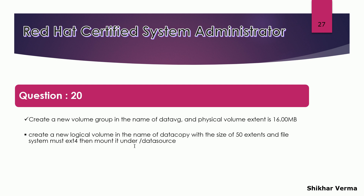If you are going to create a volume group without specifying any option, a VG will be created with a physical extent size of 4 MB — that is the default behavior. But here they want us to create a volume group named data VG with a physical extent size of 16 MB. This is the first requirement.